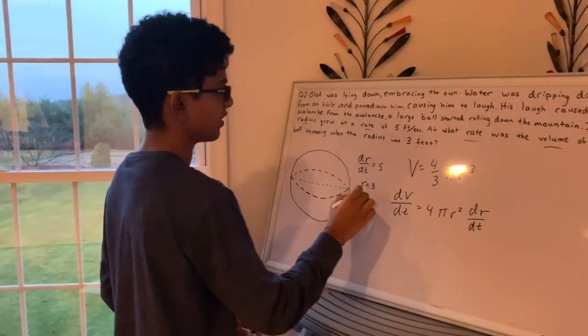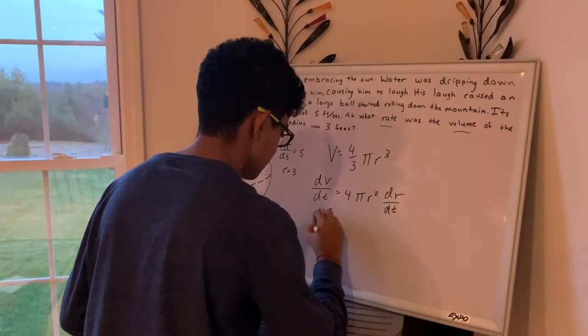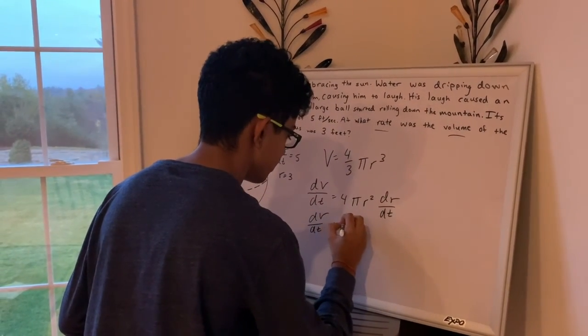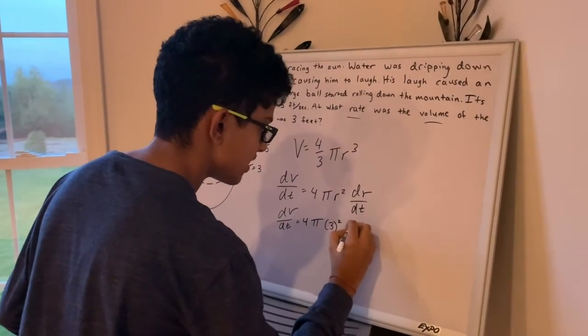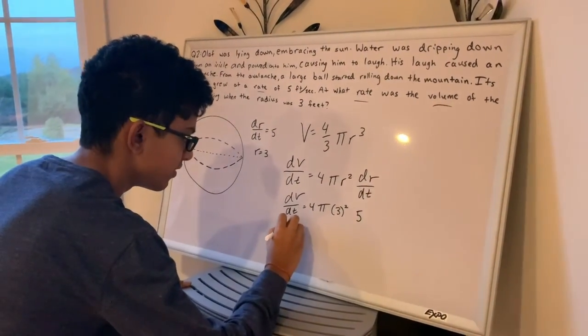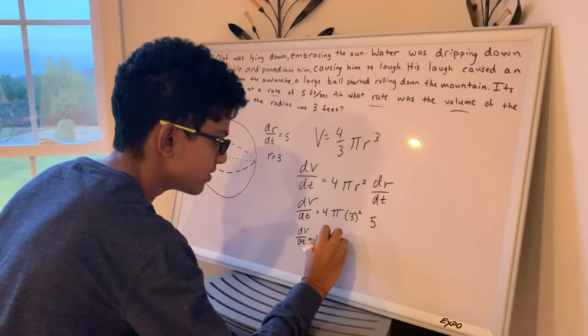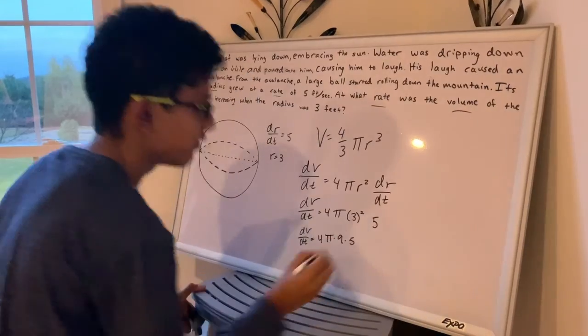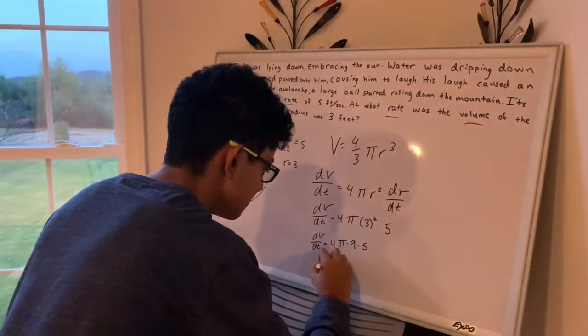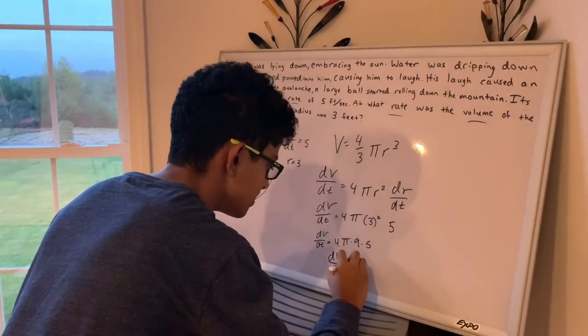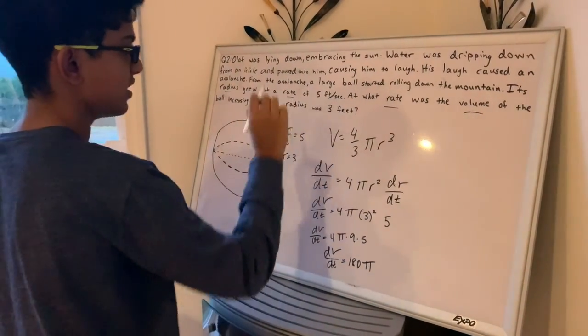So now we just substitute in the values we know. So dr dt is 5, the radius is 3, so you get dv over dt equals 4 pi times 3 squared times 5, which then you further simplify to get 4 pi times 9 times 5, and 4 times 9 is 36, times 5, 20 times 9 is 180.